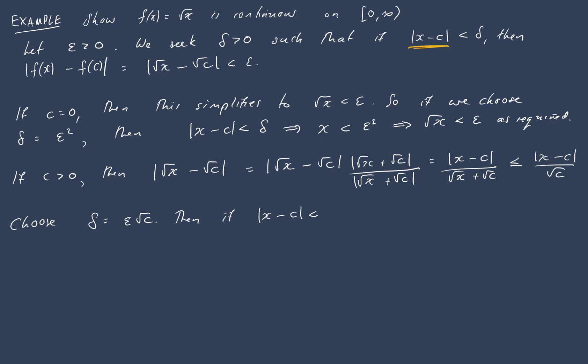If the absolute value of x minus c is less than delta, then the absolute value of root x minus root c is less than or equal to the absolute value of x minus c over root c, as we've just said. But we've got that x minus c is less than delta, so that's less than or equal to epsilon root c over root c, which equals epsilon, as required.